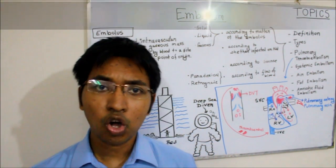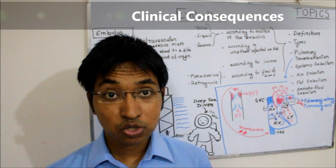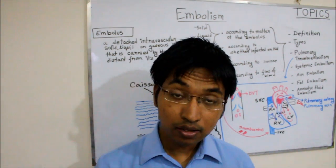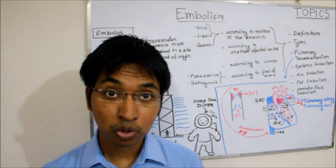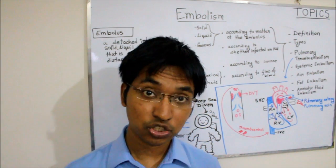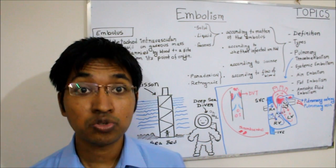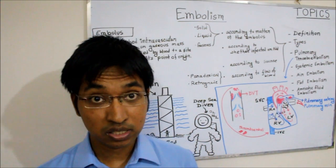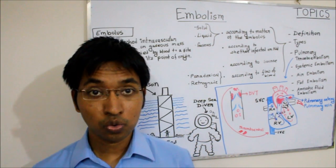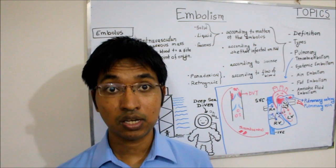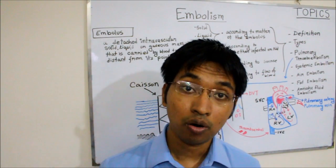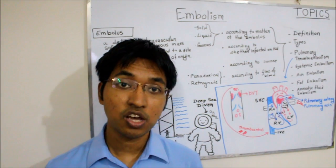Regarding the clinical consequences of pulmonary thromboembolism: always remember that in 60 to 80% of cases it is clinically silent. Why? Because the pulmonary embolism is small and doesn't occlude the entire circulation. Most of the time, those small emboli get incorporated into the vessel wall — also known as organization — and since the lung has dual blood supply, perfusion is maintained despite the small embolus. That is one clinical consequence: resolution.